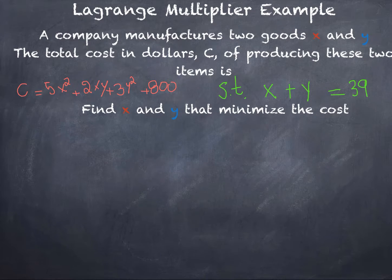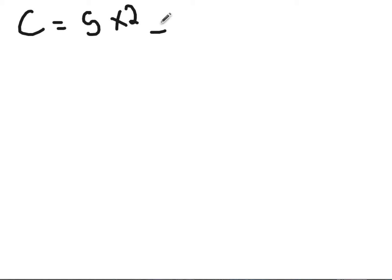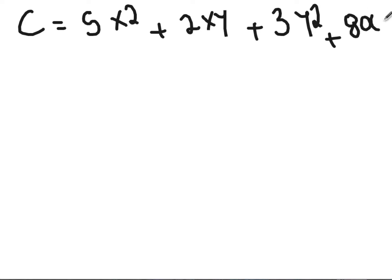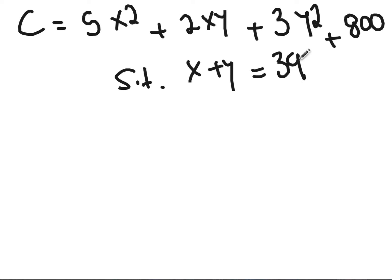The problem is subject to a budget constraint of x plus y equals 39. We have to find the x and y that minimize this cost subject to that constraint. So we have c equals 5x² plus 2xy plus 3y² plus 800, subject to the budget constraint x plus y equals 39.